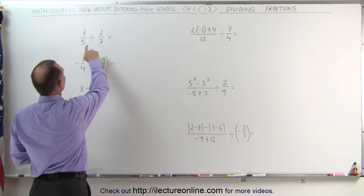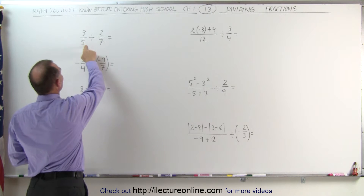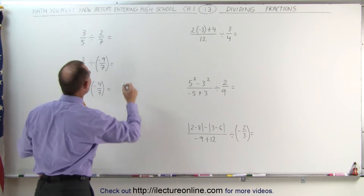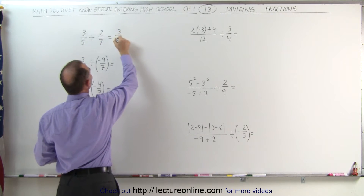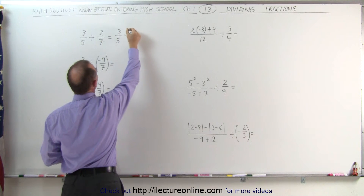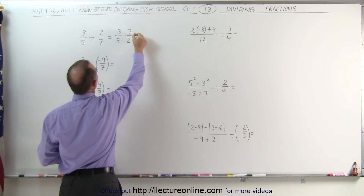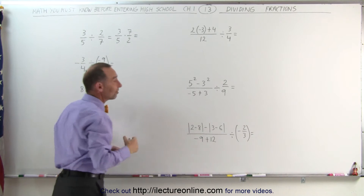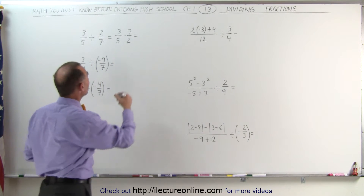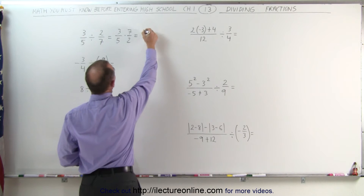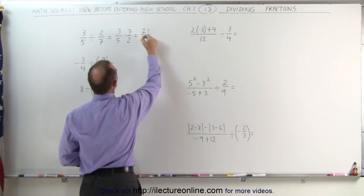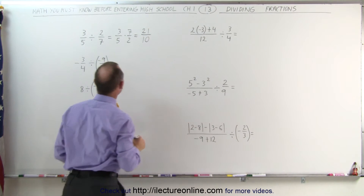For example, here we have the fraction 3 fifths divided by 2 sevenths. That is the same as 3 fifths multiplied by the inverse of this fraction, which is 7 divided by 2. Now we apply the same rules as multiplication of fractions: we multiply the numerators together — 3 times 7 is 21 — and we multiply the denominators together — 5 times 2 is 10.